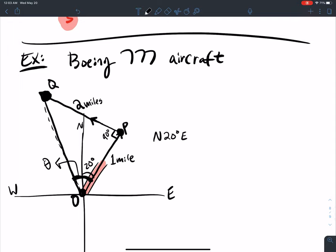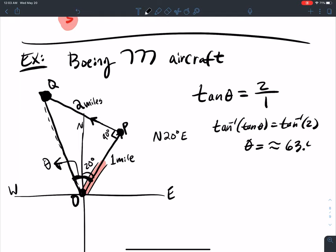What I want to know is this angle theta here. How do I do that? Trigonometry says the tangent of theta equals opposite over adjacent, two over one. So tangent inverse of theta equals tangent inverse of two, so theta equals tangent inverse of two, which is roughly 63.4 degrees.